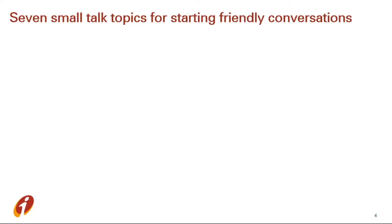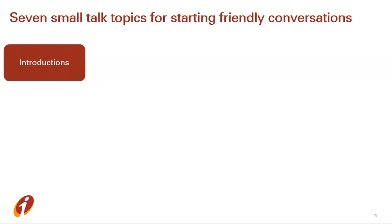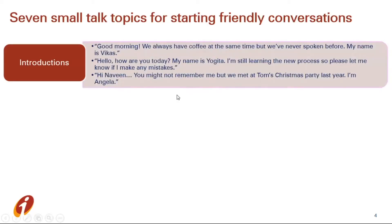So, let's now understand and talk about what are the seven different ways of starting this talk. First is introduction. This is the best way to start a conversation if you don't know somebody or you are speaking for the first time. You can give your introduction and ask for the introduction of the other person. And if possible, you can add some more information like when you met this person last. For example, we can see: 'Good morning, we always have coffee at the same time but we have never spoken. My name is Vikas.' Here in this example, we can see that they see each other on a regular basis, but this is the first time they are speaking.